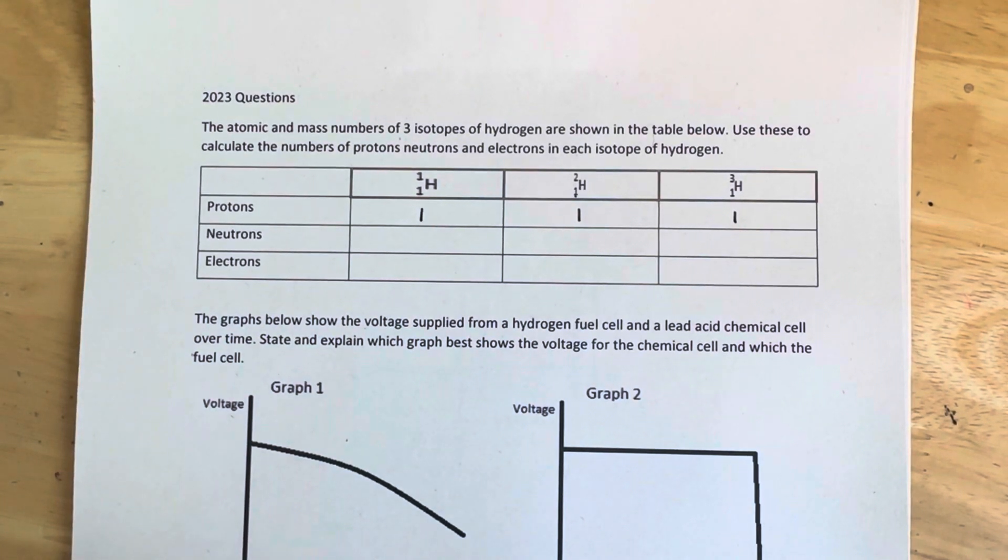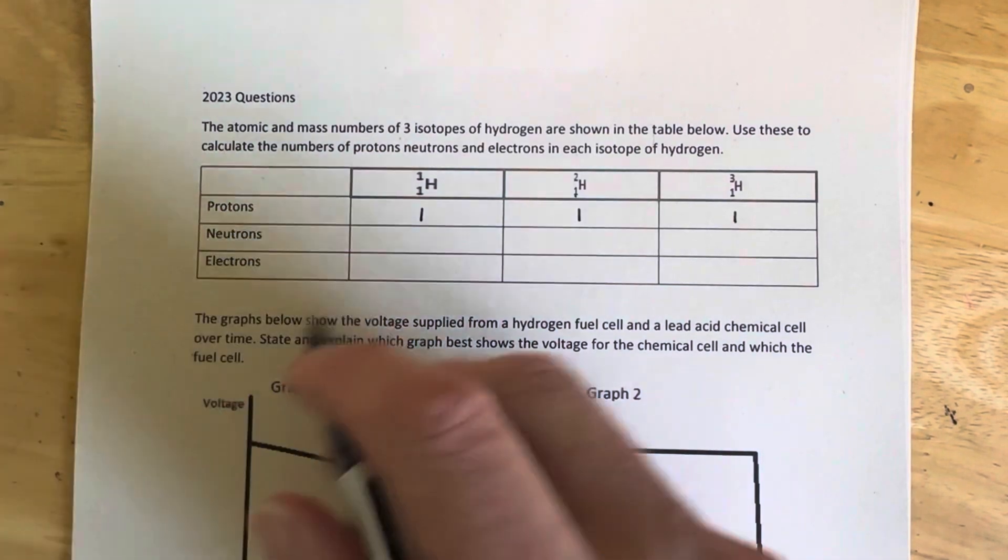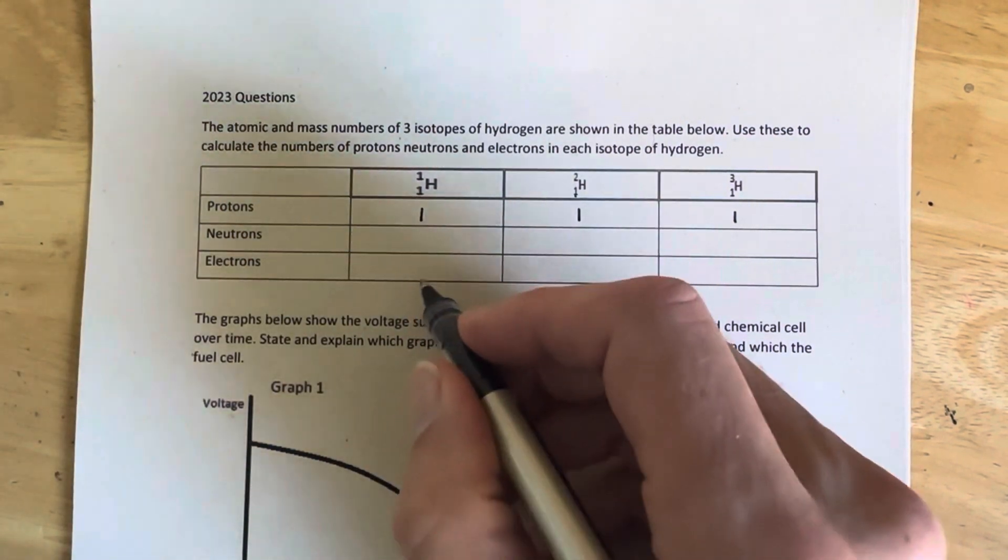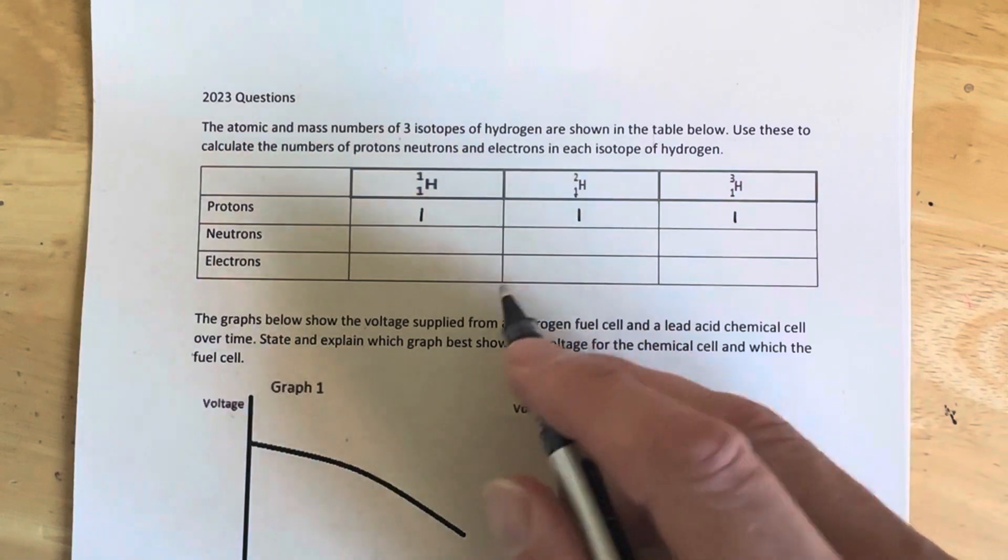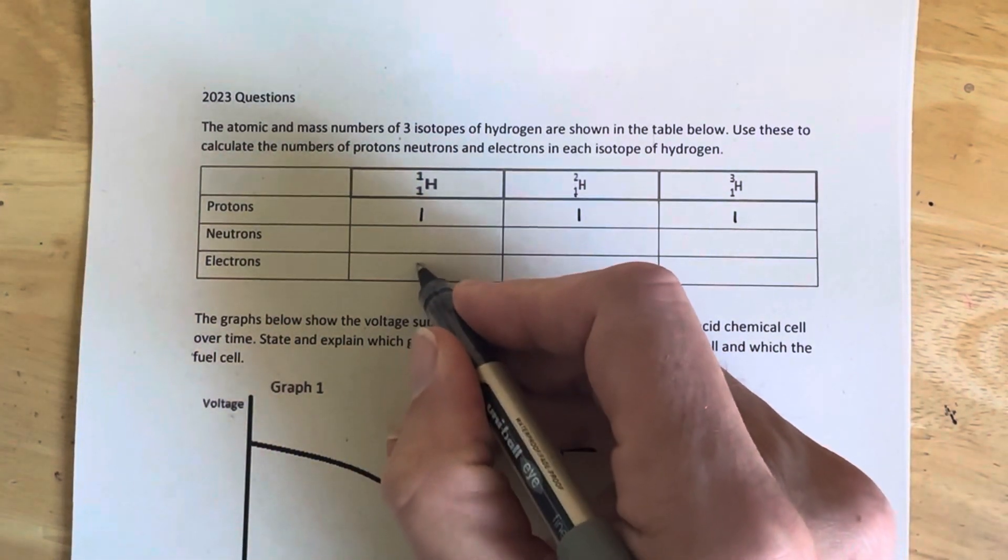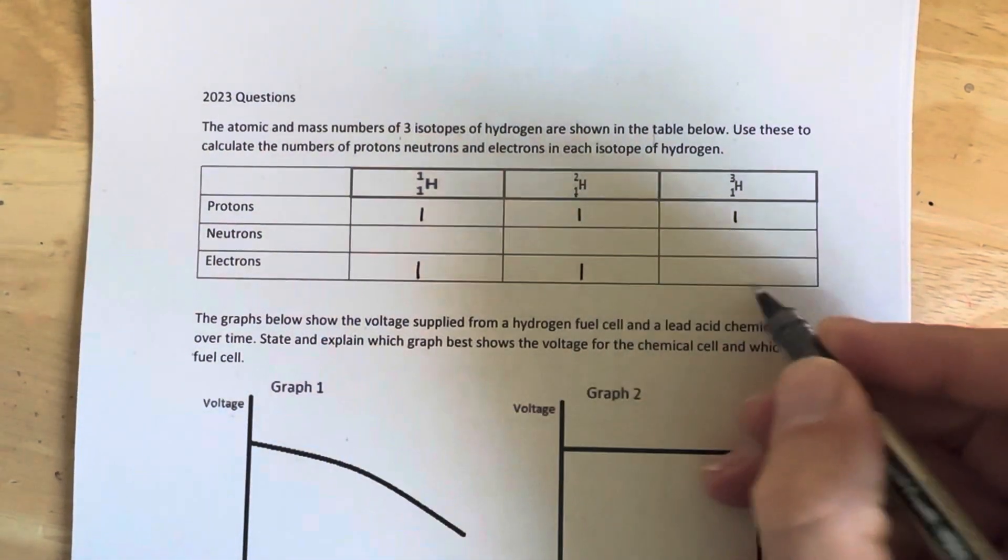Now, if they've got the same number of protons, atoms of elements are, of course, electrically neutral. So if it's got one proton, it's got one positive charge. So there must be one negative charge to balance each of these protons out. And electrons are negatively charged. So there must be one electron in each.